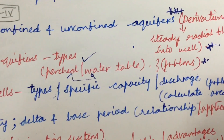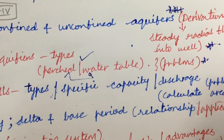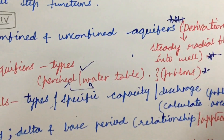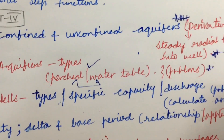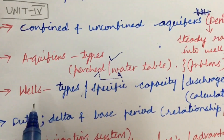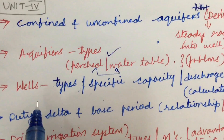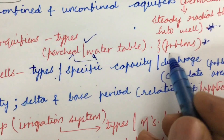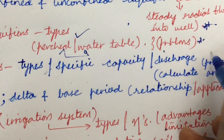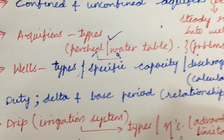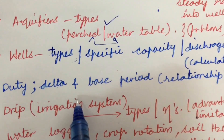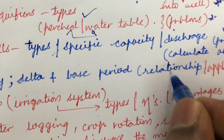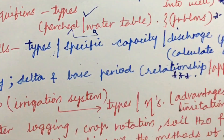Dear students, a video on how to write a theory paper to score better marks in JNTU examination has been posted on my channel — please go through it. Later, wells and their types, specific capacity, discharge, and related problems are very important. Duty, delta, and base period, and the relationships among them as well as their applications, may be a 7-mark question.